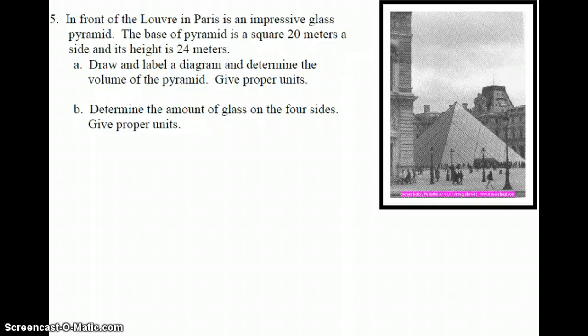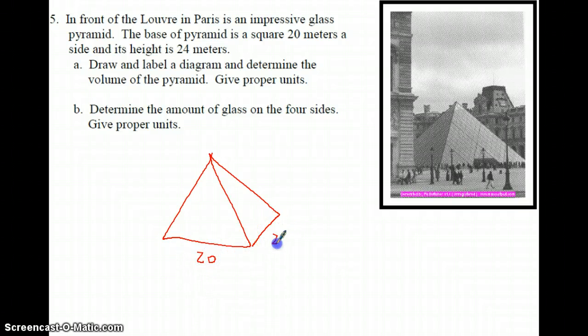Alright, in front of the Louvre is an impressive glass pyramid. I'm sure a lot of you have probably seen that. The pyramid is 20 by 20. It's a square on the base. People got really mad when they built that first because it looked really modern and they had this nice big old castle-y kind of thing. And the height is 24. So that means the straight up height in the middle is 24. Draw and label the diagram. Give proper units. Great. Oh, and find the volume. Volume here is one-third area of the base times height, which is not that bad. So that's 400 times 24 divided by 3. I get 3,200. Oh, yeah. Proper units. Oops. This is meters. We're talking volume, meters cubed.